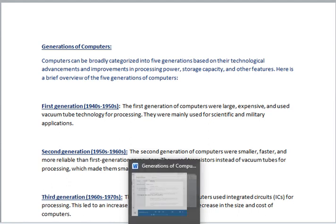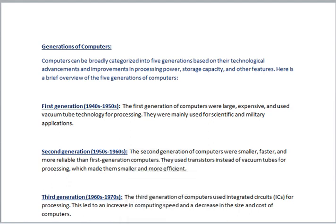Generations of Computers. Computers can be broadly categorized into 5 generations based on their technological advancements and improvements in processing power, storage capacity, and other features. The first generation of computers were large, expensive, and used vacuum tube technology for processing. They were mainly used for scientific and military applications.